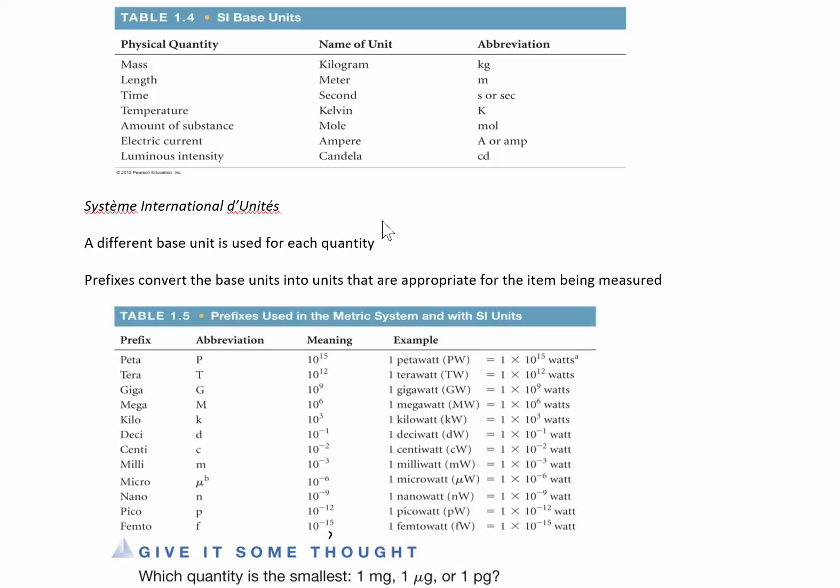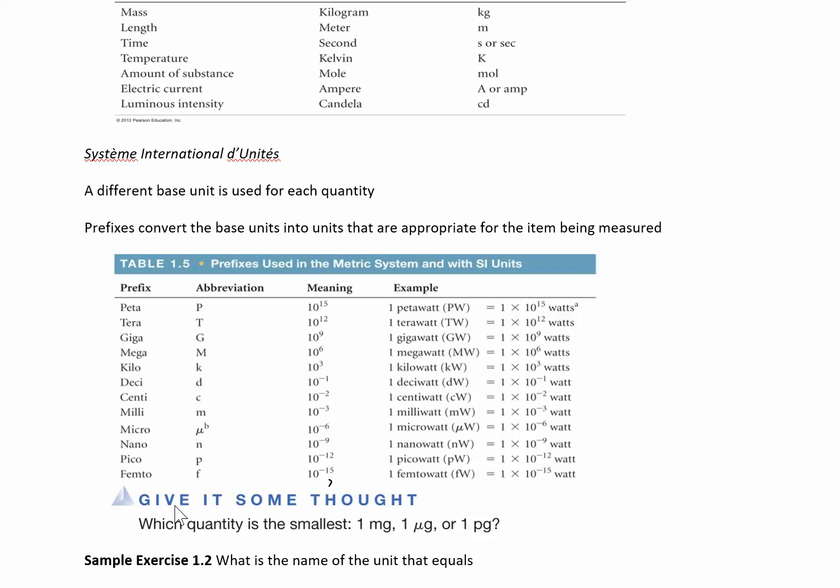What we're going to do is take these base units and then add prefixes to help us convert depending on what we're trying to talk about. If we have something really big we might use these prefixes. These are getting smaller, so down here you have small things and then over on the top there it's a little bit bigger.